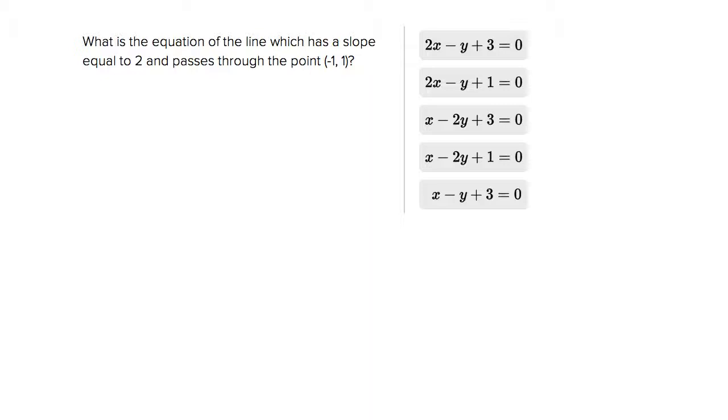Well there's a form of a line called point-slope form which you need to memorize which is perfect for this. You take y minus y₁ which is the y-coordinate of a point equals m which is the slope times x minus x₁ which is the x-coordinate of a point.